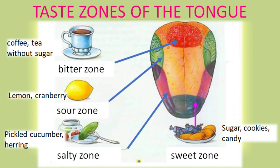Taste zones of the tongue. Coffee or tea without sugar affects the bitter taste zone. Lemon or cranberries affect the sour taste zone. Pickled cucumber or herring affects the salty taste zone. Sugar, cookies and candy affect the sweet taste zone.